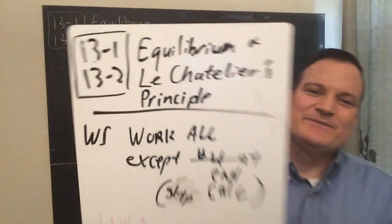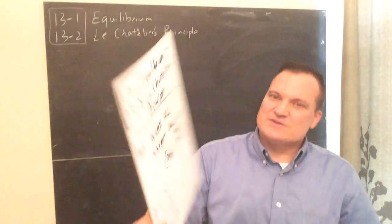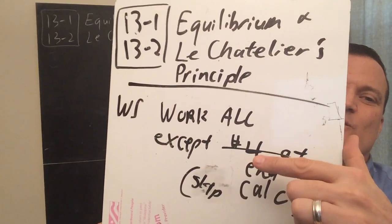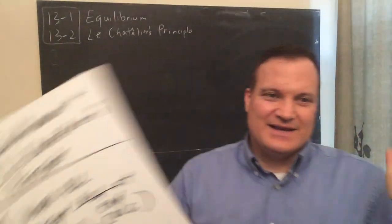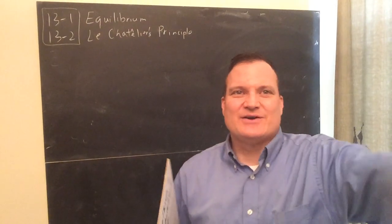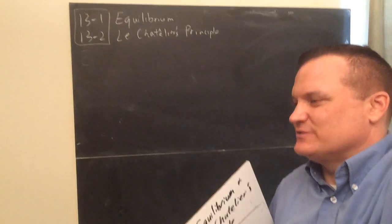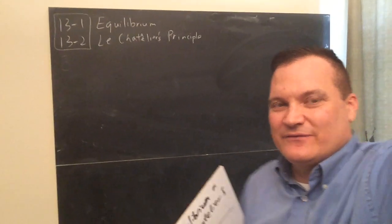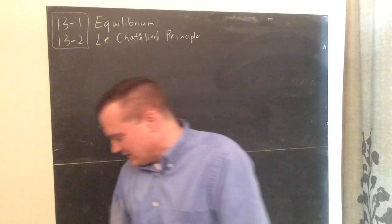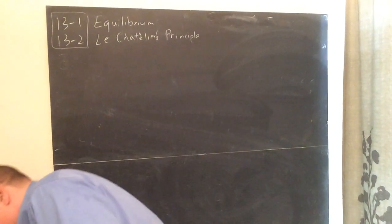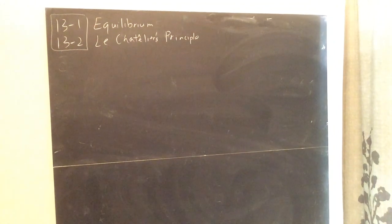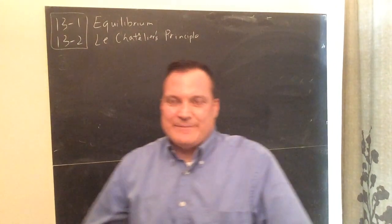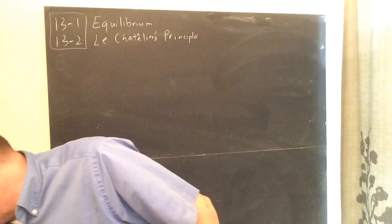Equilibrium and Le Chatelier's principle — on the worksheet, do all of the assignment except don't do number four at the end. It's a calculation, and I don't know why I put that one in there. It goes to another place, and even then don't worry about it right now. You'll see the answer key to it later at a later date — probably not worth trying if you don't know how to do it yet.